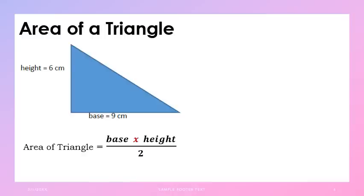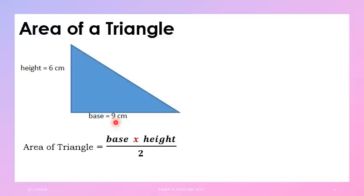Let's move to the area of a triangle — this is also easy. First, understand the dimensions of a triangle. A triangle has a base and a height. In the figure in your learner's packet, the base is 9 cm and the height is 6 cm. These two dimensions are all you need to solve the area of a triangle. The formula is: area of triangle equals base times height divided by 2.